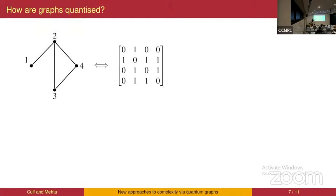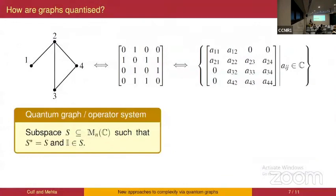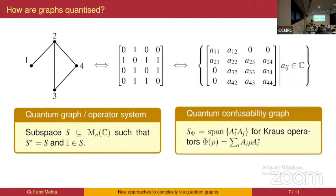To get a quantum version of this problem, we need to ask how graph properties of classical channels should be turned into graph properties of quantum channels. This is done via the idea of a quantum graph. Given a graph, one way to represent it beyond a drawing is using the adjacency matrix, which can be associated to an operator system. For a classical graph, this is the vector space of matrices where you fill in every place in the adjacency matrix with a one or on the diagonal with an arbitrary complex number. Formally, an operator system is a vector subspace of matrices closed under Hermitian conjugation that contains the identity operator.